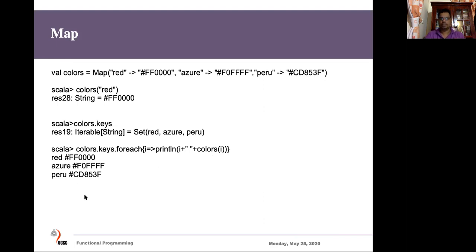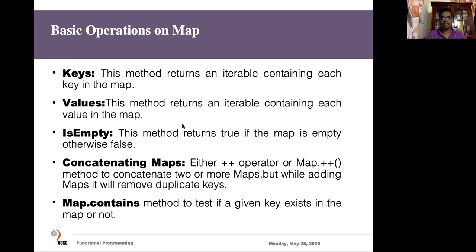In Scala there is an 'Iterable' trait that has 'foreach' defined, so we can call 'foreach' and for each key-value in the map we can do various operations. We get each key-value one by one and transform it using the arrow to some operation — for example, printing the key plus a space plus the color value. That's how we can access elements in the map. There are also operators like 'keys', 'values', 'isEmpty', an operator to add two maps together, and 'contains' to check whether a key exists.